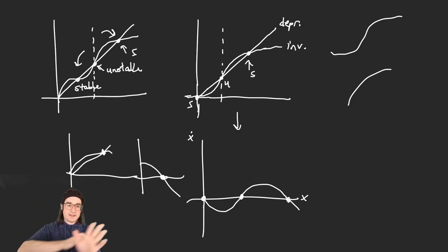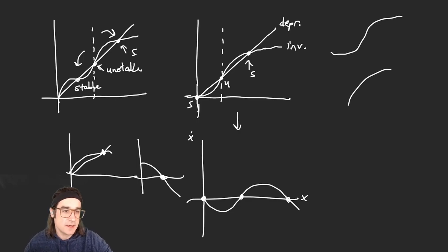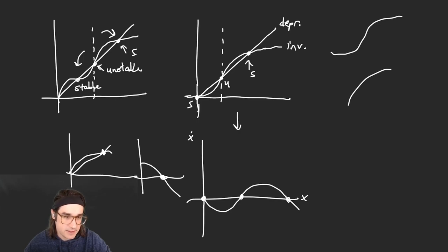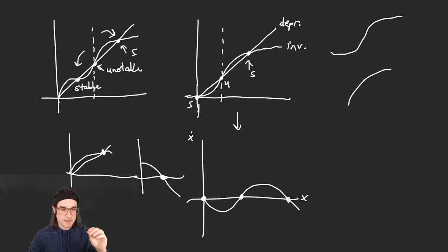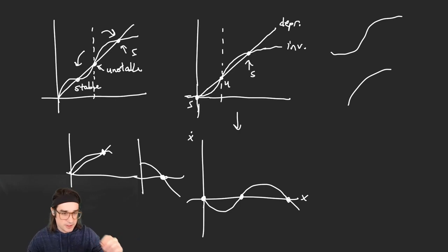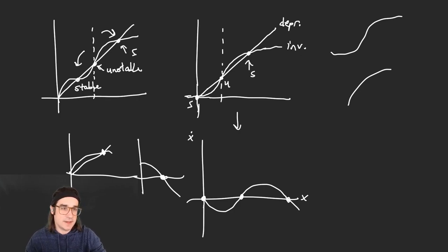This is all 1D. When you get into 2D, things get trickier, because in 1D with continuous movements, it's actually impossible to oscillate. If you don't jump — if you're moving infinitesimally — and this thing is stable, you're not going to overshoot it and then come back. You're just going to go there and stay there. If it's unstable, you'll move away from it. You can't get oscillatory dynamics in 1D.